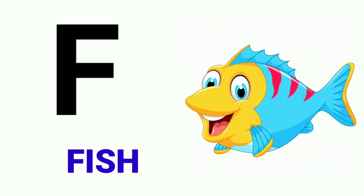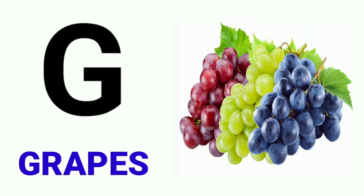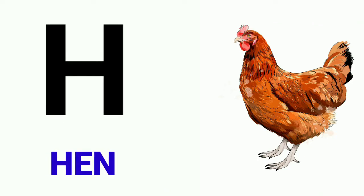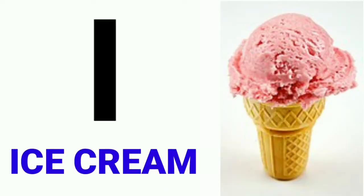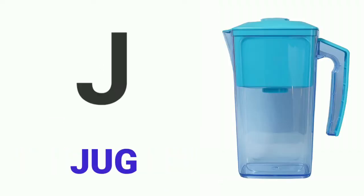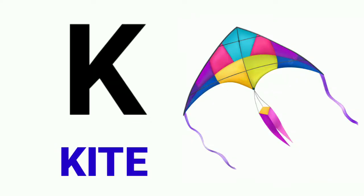F for fish, G for crabs, H for hen, I for ice cream, J for jug, K for kite.